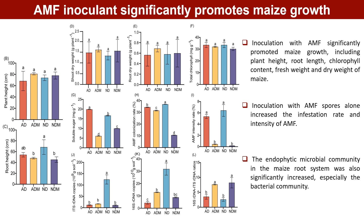By analyzing the copy number of 16S rDNA and ITS rDNA, we found that the abundance of endophytic bacteria and fungi in the maize root system was significantly increased by AMF inoculation, especially the bacterial community. Therefore, we further investigated the effect of AMF inoculation on endophytic bacterial communities in maize.